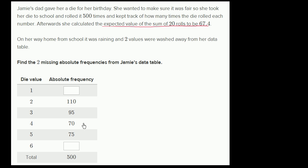So you see here, she rolled her die 500 times, and she wrote down how many times she got a two. She got a two 110 times, a three 95 times, a four 70 times, a five 75 times, and then she had written down how many times she got a one and a six, but then it got washed away. So we need to figure out how many times she got a one and a six, given the information on this table right over here, and given the information that the expected value of the sum of 20 rolls is 67.4. So I encourage you to pause this video and think about it on your own before I give a go at it.